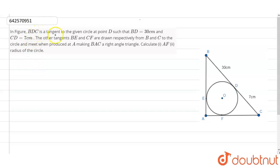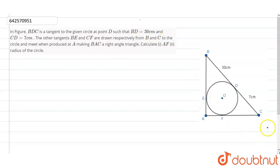The question states that BDC is a tangent to the given circle at point D, such that BD equals 30 centimeters and CD equals 7 centimeters. Other tangents BE and CF are drawn respectively from B and C to the circle.